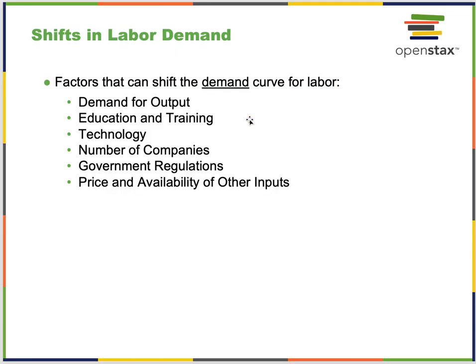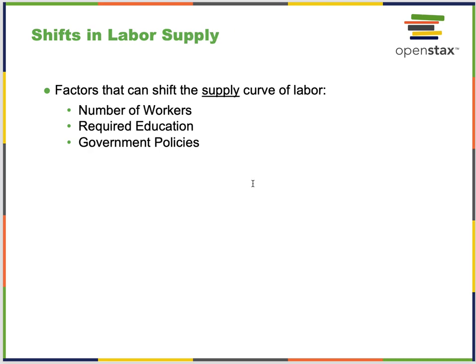Factors that can shift the demand curve for labor include: the demand for output, education and training, technology, the number of companies competing, government regulations, and the price and availability of other inputs. Factors that can shift the supply curve include: the number of workers, required education, and government policies.